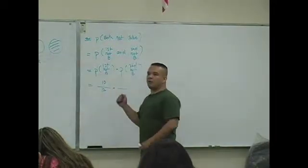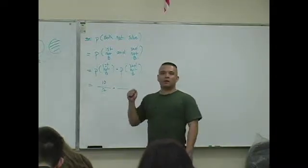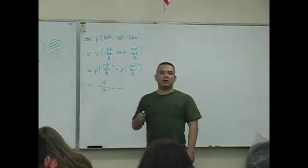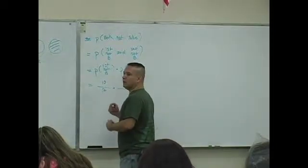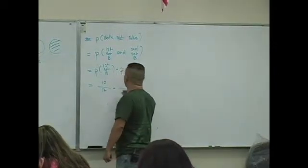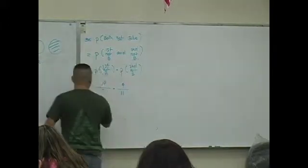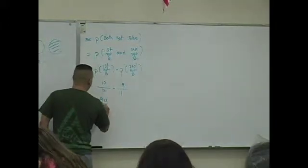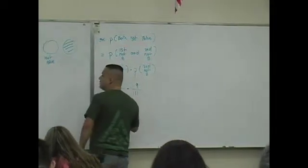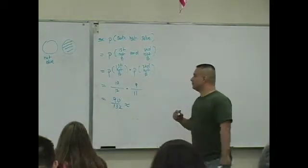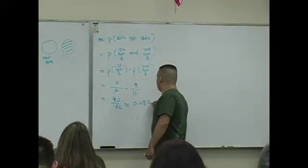What did you do with that non-blue marble? You threw it out the window. Reaching in the bag again — what's the probability that that second marble is not blue? 9 out of 11. So this is 90 over 132. What is this answer approximated to the nearest thousandths? It's 0.682.